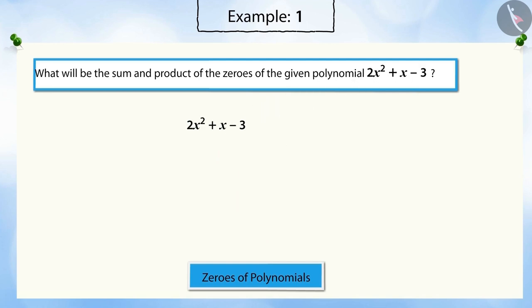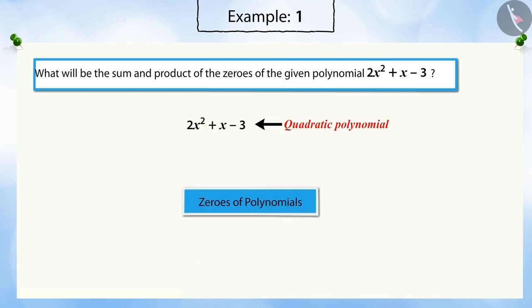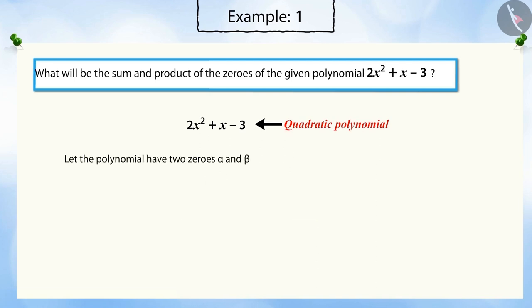Correct, because it is a quadratic polynomial. It can have at most two zeros. Let's assume the polynomial has two zeros, α and β.